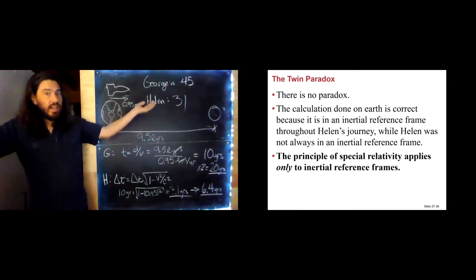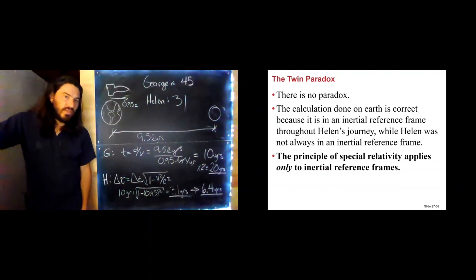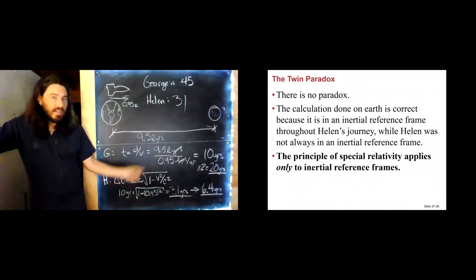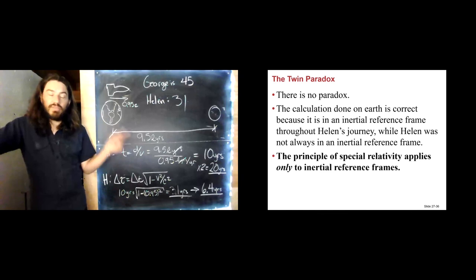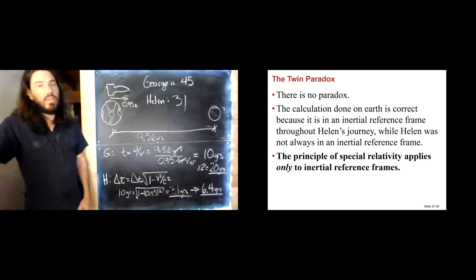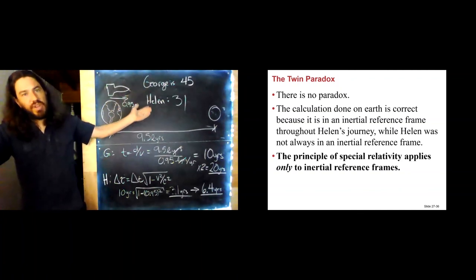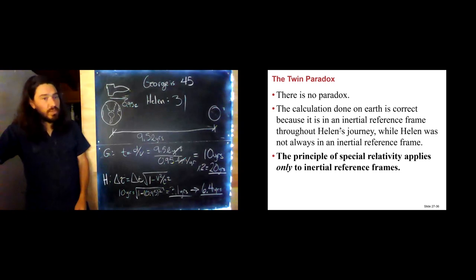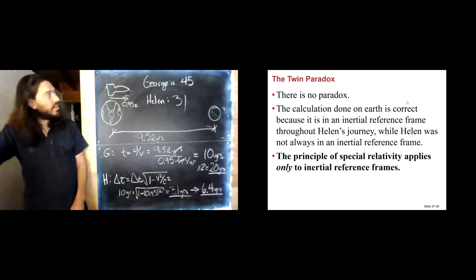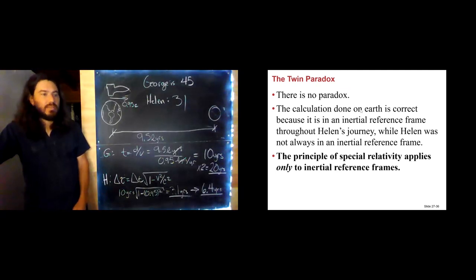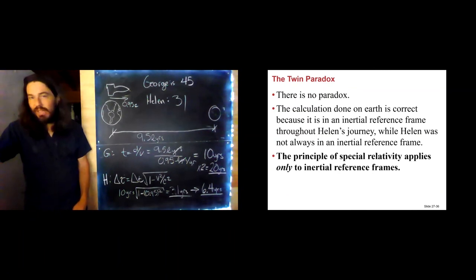Only one of these people is in an inertial reference frame: George. Therefore, this math is right for George. Helen's reference frame is not inertial, so she cannot use special relativity — she needs general relativity for this calculation. If we did use general relativity from Helen's perspective, we would find complete agreement. A surprising conclusion is not the same as a paradox. This, as far as we know, is actually how this bizarre universe we live in works.